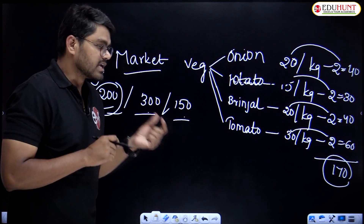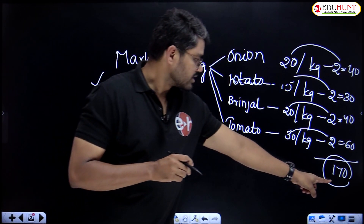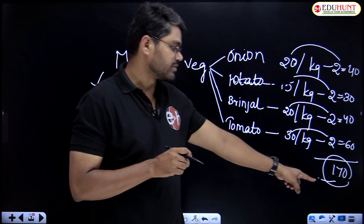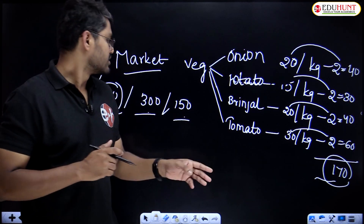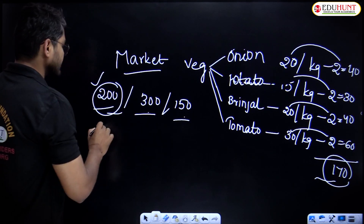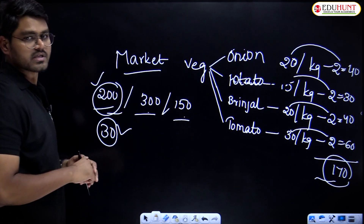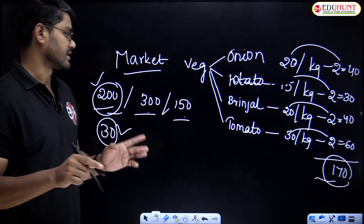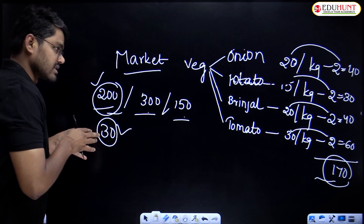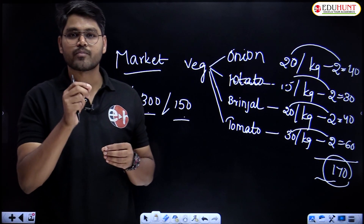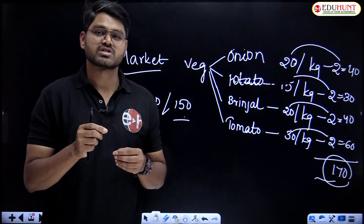Maybe 200, maybe 300, maybe 150, maybe 500 if I want to buy more vegetables. So that is estimation. The estimated amount here is maybe 200 rupees. If I want to buy these four vegetables, I will take 200 rupees to the market. This is the estimated amount. But in fact, I spent 170 rupees. So the remaining 30 rupees I take back home. This is estimation — a very important concept.